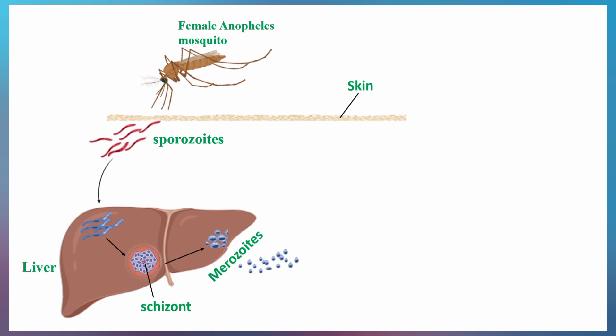The schizonts then burst to release merozoites. This is the exo-erythrocytic stage — the stage taking place outside the red blood cells — where sporozoites are released into the bloodstream, move into the liver, develop into schizonts, which then burst to release merozoites into the blood.